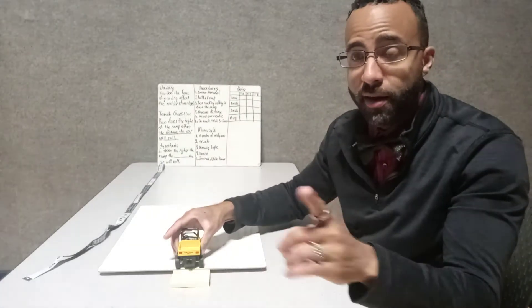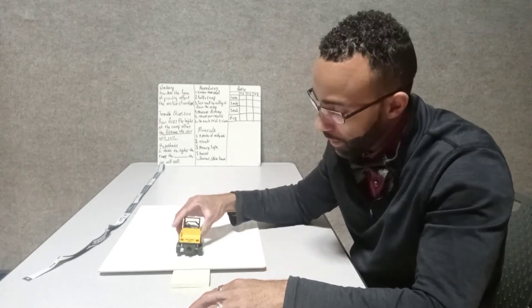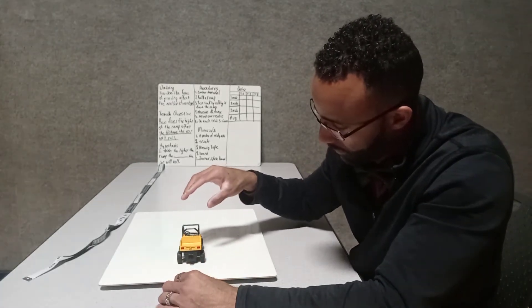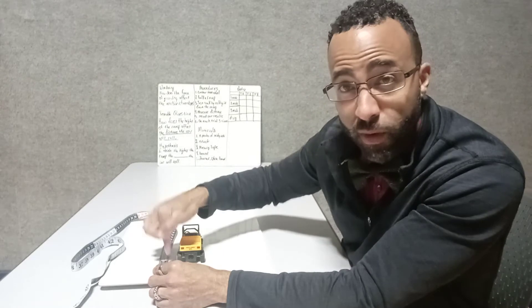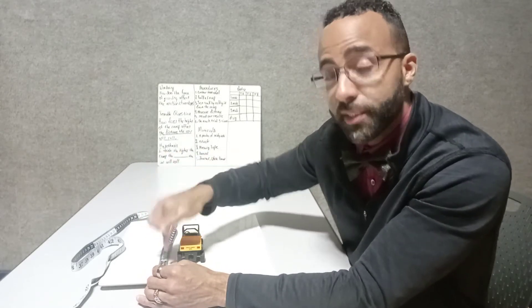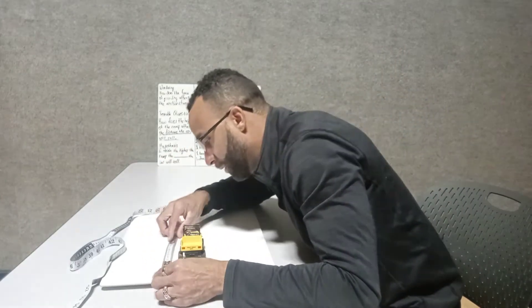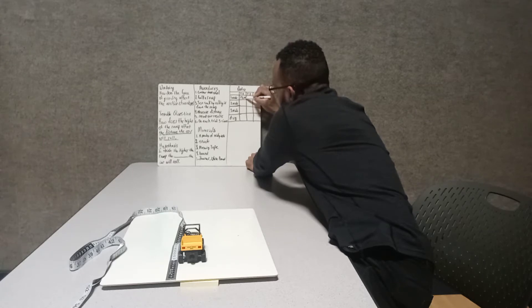Trial number one. It didn't even move — let's try it one more time. That's all we got, let's measure. Here's where it can get confusing: if I measure to the back of the back wheel the first time, I have to measure to the back of the back wheel every single time. Everything has to be accurate and consistent. I'm going to measure to the front tire — that's 17 centimeters — and write it in my results.